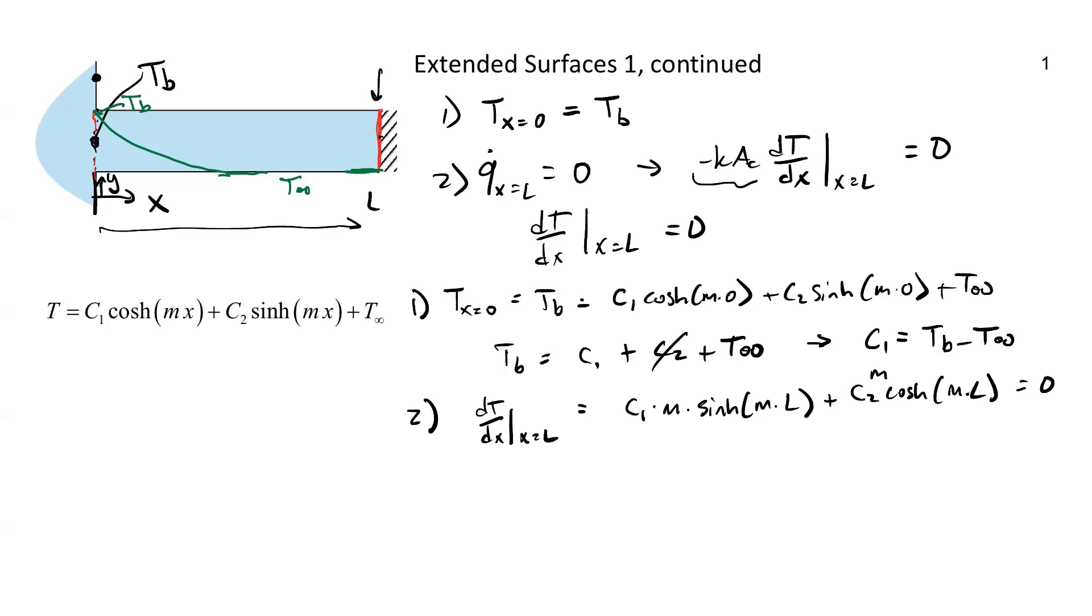So now we can go back and substitute in C1. So let's actually just write this out. First, let's solve this for C2. So C2 is equal to minus C1 sinh of ML divided by cosh of ML. So this is actually another way of writing this is minus C1 times tanh, hyperbolic tangent of ML. So now we have our solution for C1, C1 can be substituted in there, and we can calculate C2.